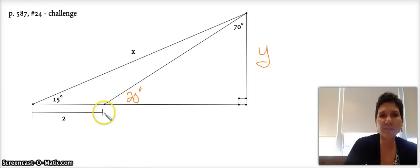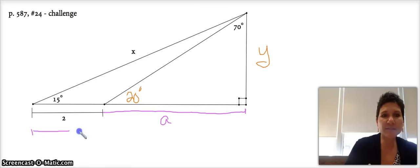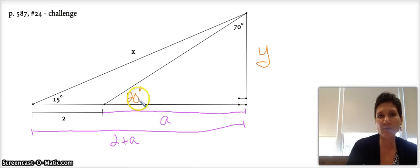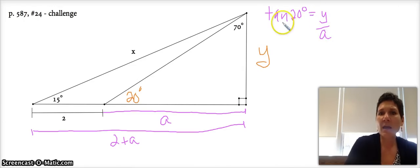So first things first is I don't know what the length of this side is right here, so I'm going to call him A. Which means the length of this entire segment here is going to be 2 plus A. So now the cool thing is, if I go back to the triangle that has the 20 degrees, I'm going to create a relationship and I'm going to say that the tangent of 20 degrees is equal to Y over A. And if I solve for Y, I get Y is equal to A times the tangent of 20.